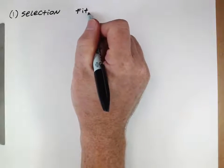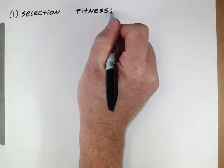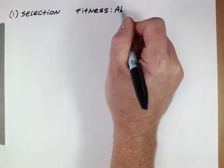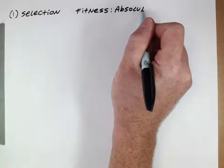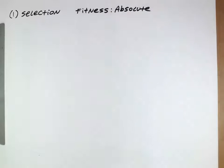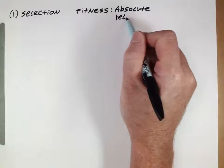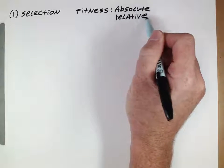The first thing to consider is what type of fitness we're thinking about. There are two types: absolute fitness, which refers to the total number of copies an entity makes of itself — like an individual having offspring or a gene reproducing itself — and relative fitness, which is how an entity does in terms of reproduction compared to the other entities in the same population.